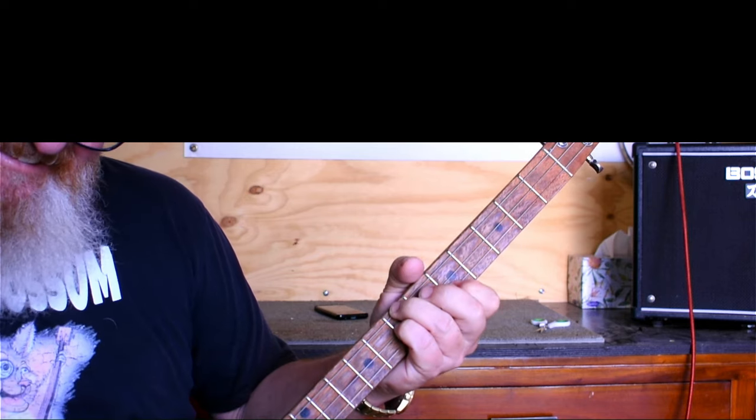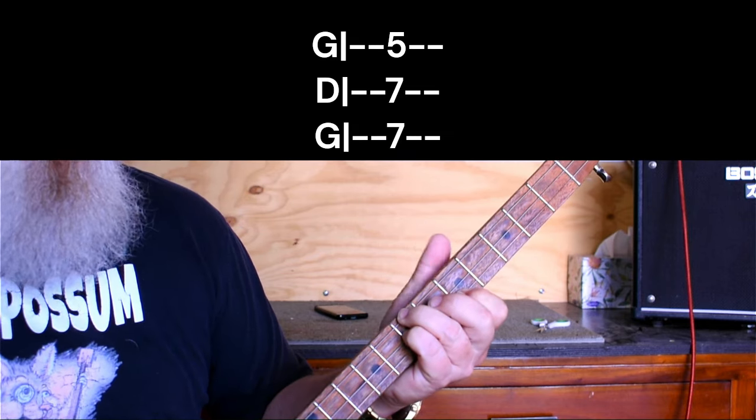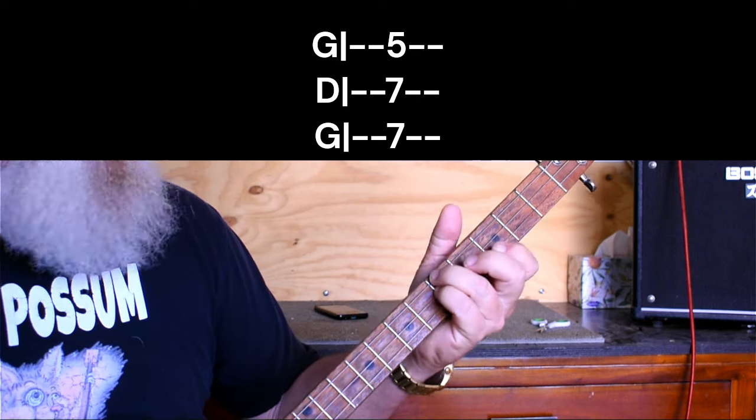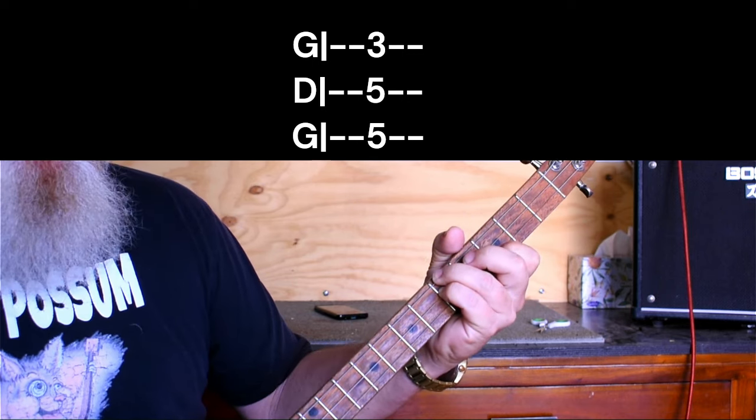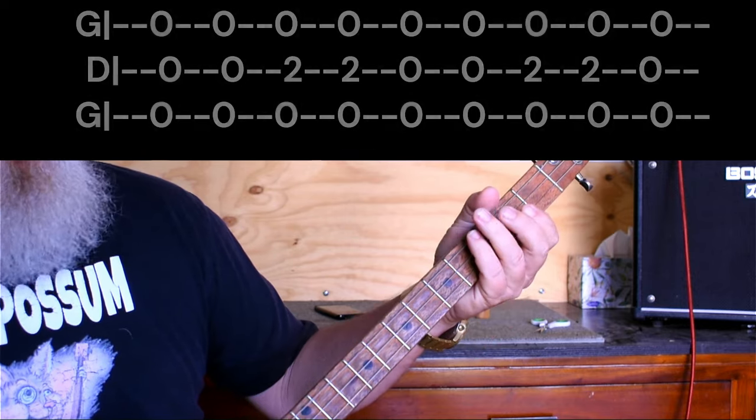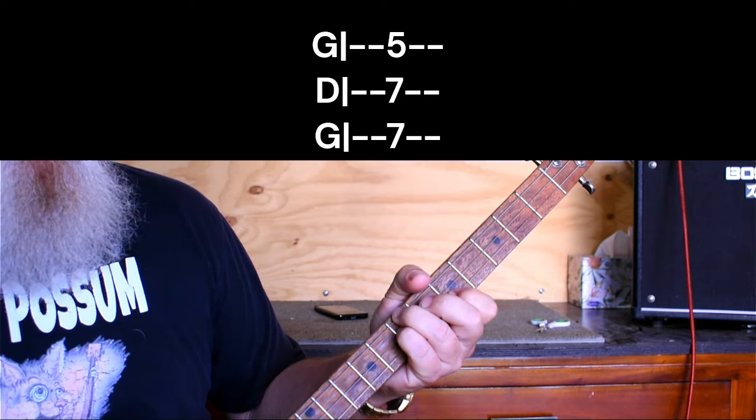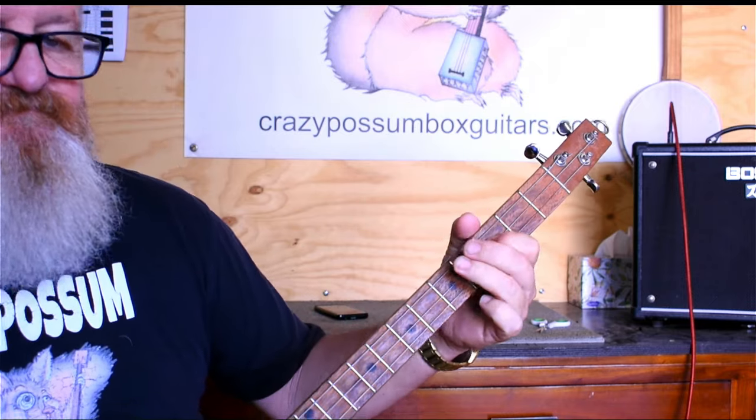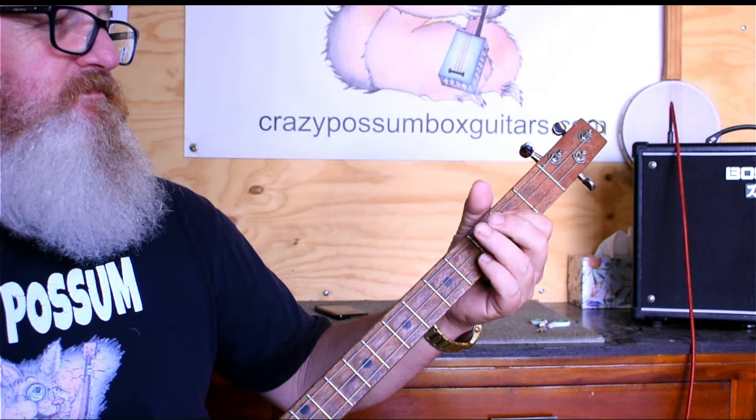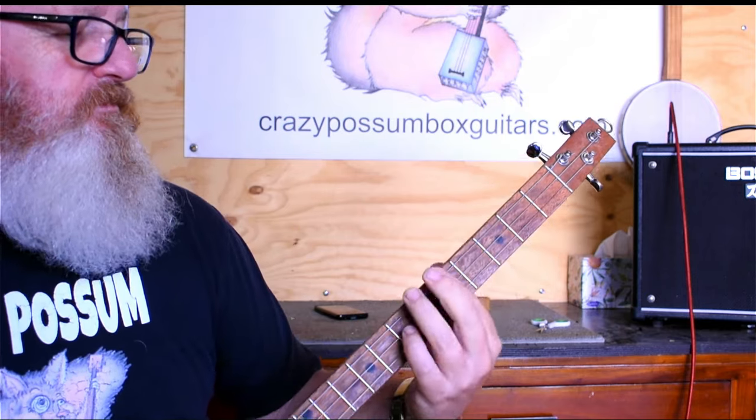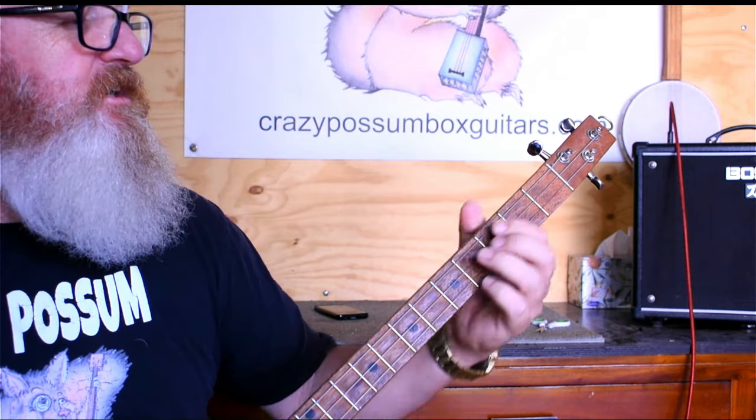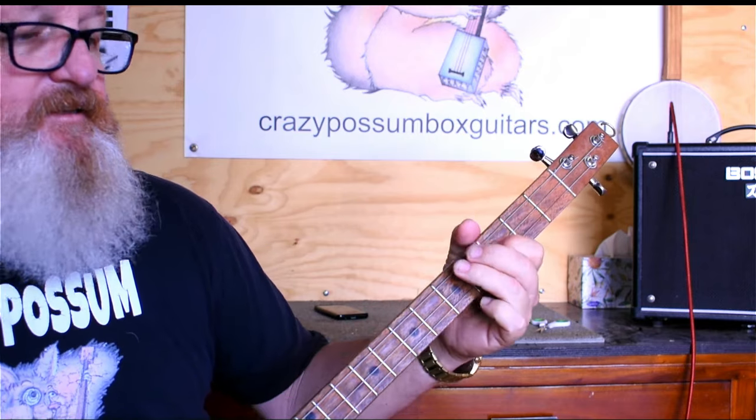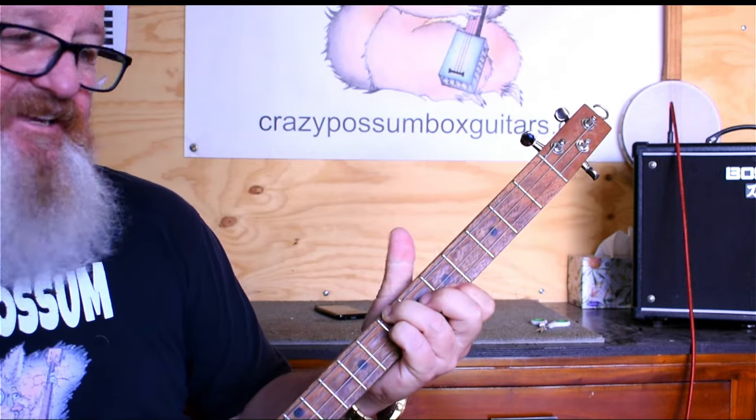And then we go to our D seventh, which is seven, seven, five. Then we go to a C seventh, which is five, five, three. And then come up here and we just start again. Now put the other one. Up here on the C. To the D seventh. To the C seventh.